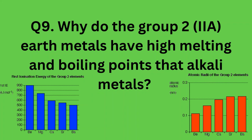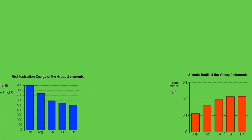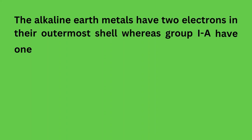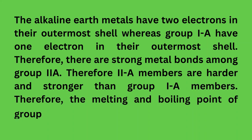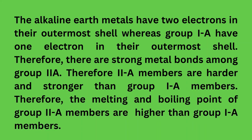Question 9: Why do group 2A earth metals have higher melting and boiling points than alkali metals? Alkaline earth metals have two electrons in their outermost shell, whereas group 1A have one electron. Therefore, there are stronger metallic bonds among group 2A members, making them harder and stronger than group 1A. As a result, the melting and boiling points of group 2A are higher than group 1A.